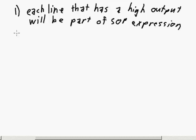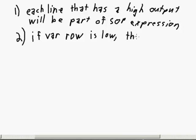And the second thing is once we've identified all the lines that are high, we're going to look at the values of each one of the variables for that line. So if the variable in that row is low, then we want to invert the variable. Use the complementary form of the variable.